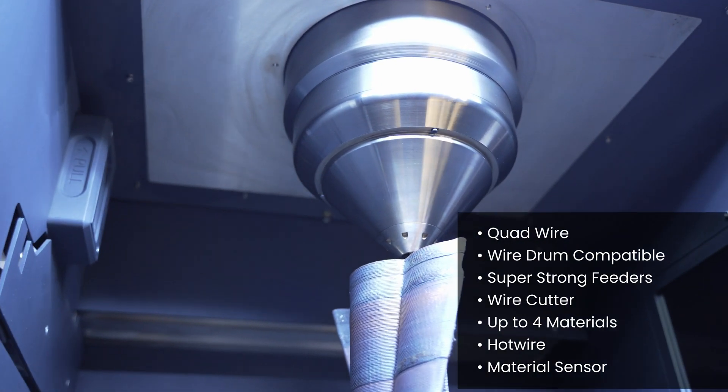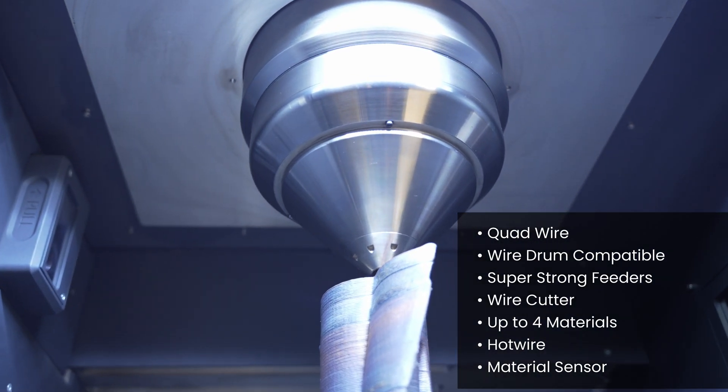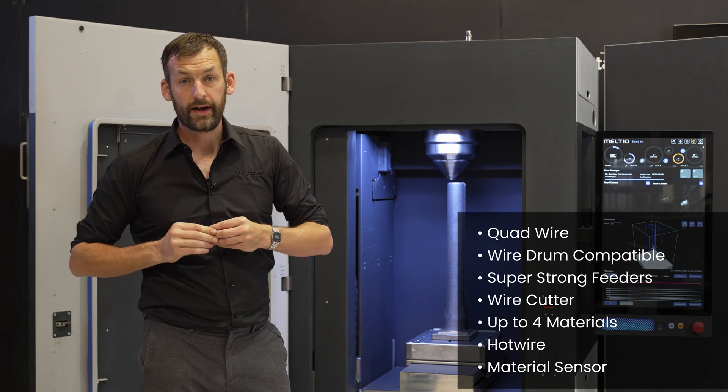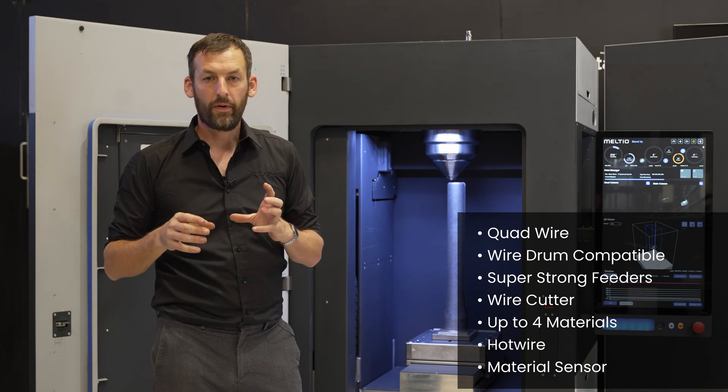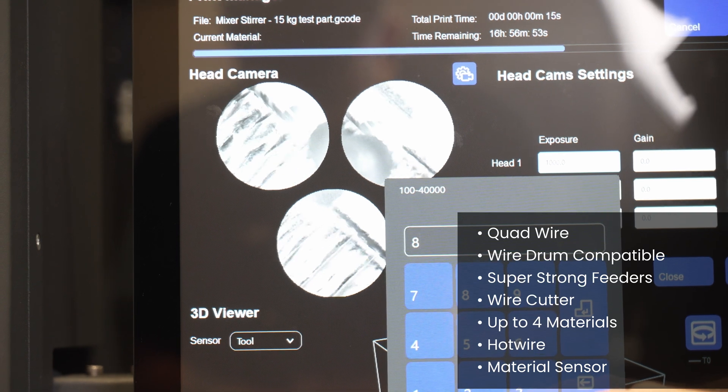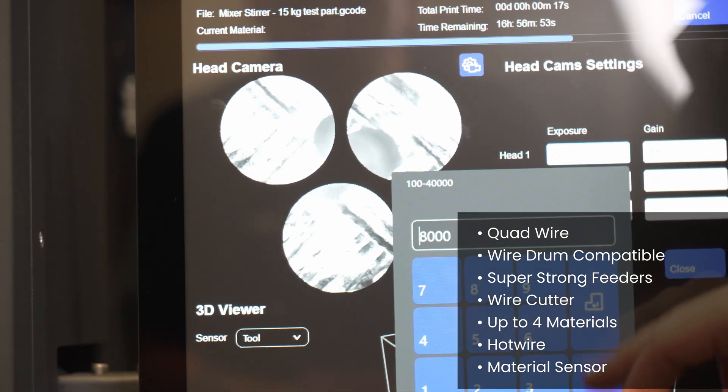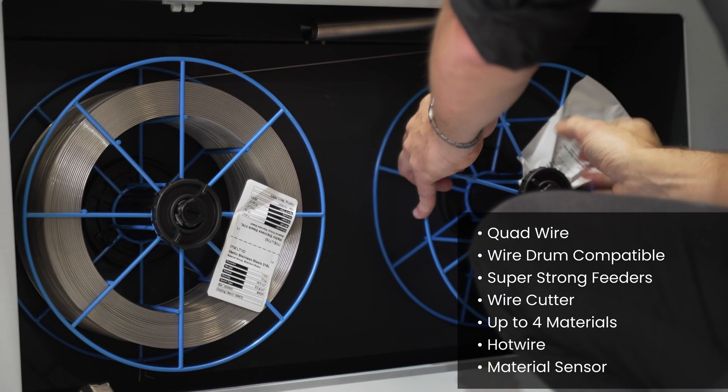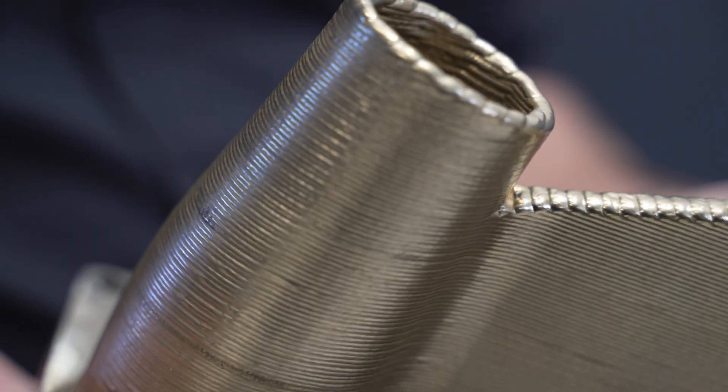The M600 is capable of doing up to four materials in a single print, a system we call quad wire. Coupled with the hot wire system for increased throughput and the open material system which includes aluminum and copper alloys, this allows us to produce the next generation of metal parts.